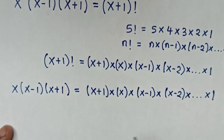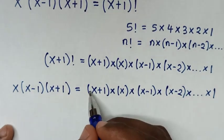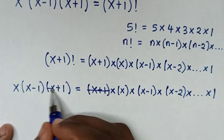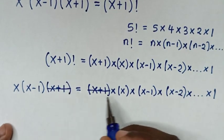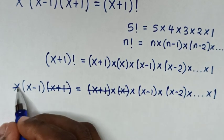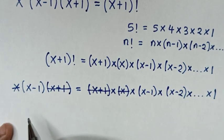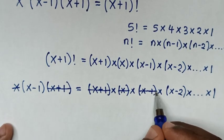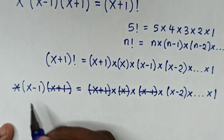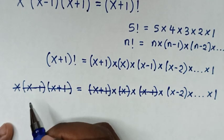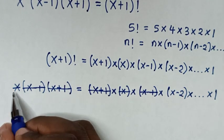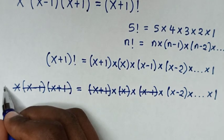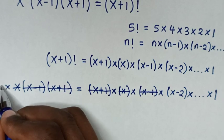In the next step we simplify. The (x+1) on the left cancels with (x+1) on the right. Then x cancels with x. Then (x minus 1) cancels with (x minus 1). So after cancellation, the left side becomes times 1.